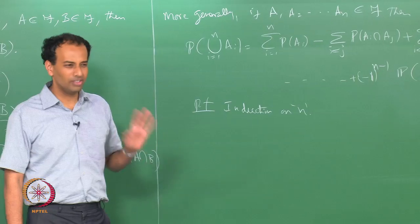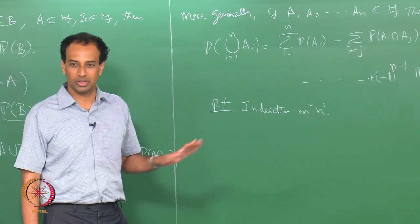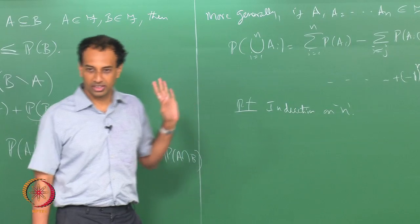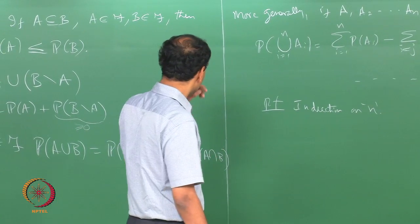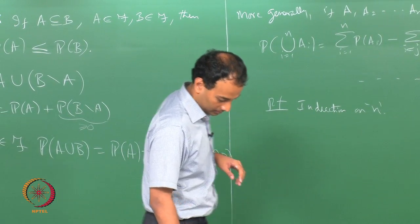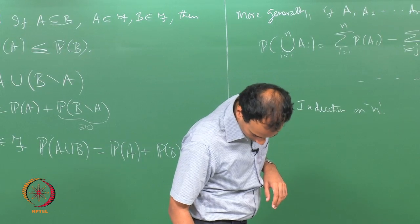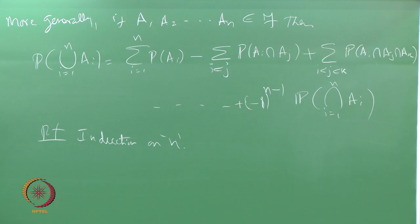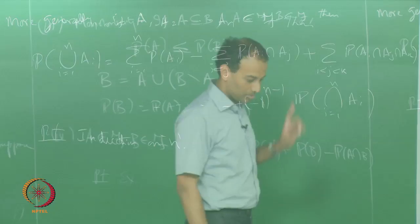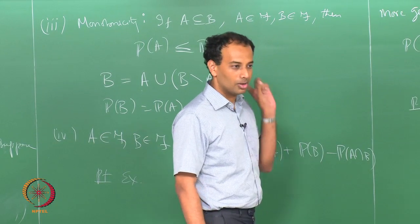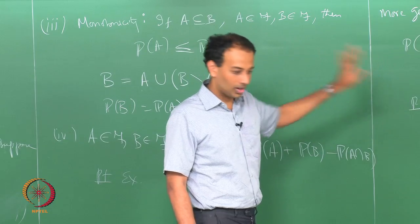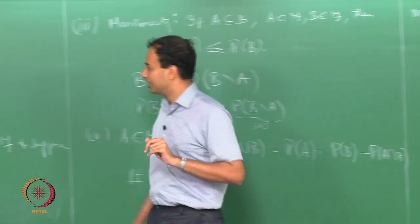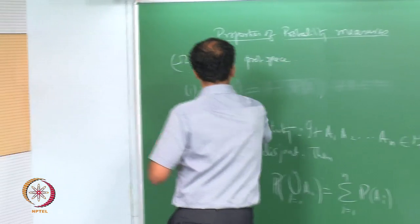So far, these are all very elementary properties of probability measures — most of you already know this. The remaining properties are more advanced. Property number 5 is coming up, and it requires slightly more care in proving.